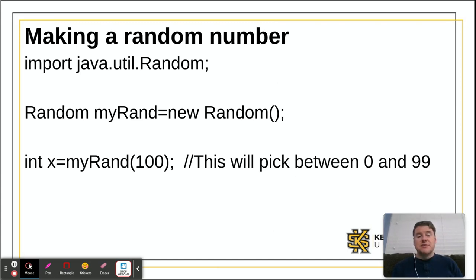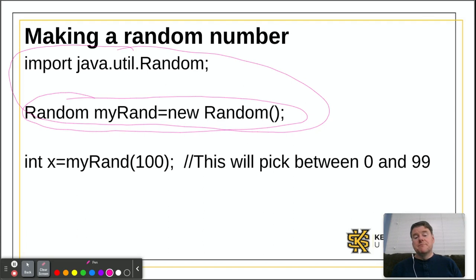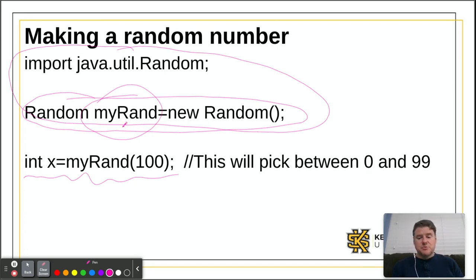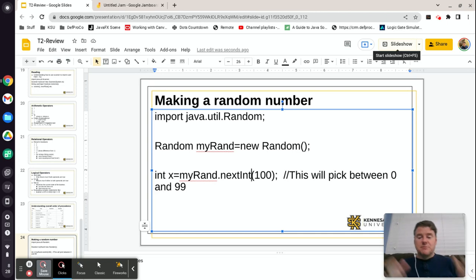The random number generator is used to pick a random number. You need three things: the import statement import java.util.Random; then inside the main method, Random myRand = new Random; and then to pick a number, int x = myRand.nextInt(100), which picks a number between 0 and 99. If you say nextInt(42), it picks between 0 and 41. The result is stored in a variable.